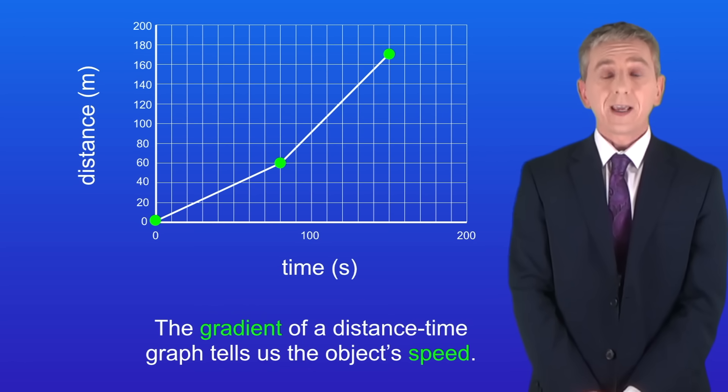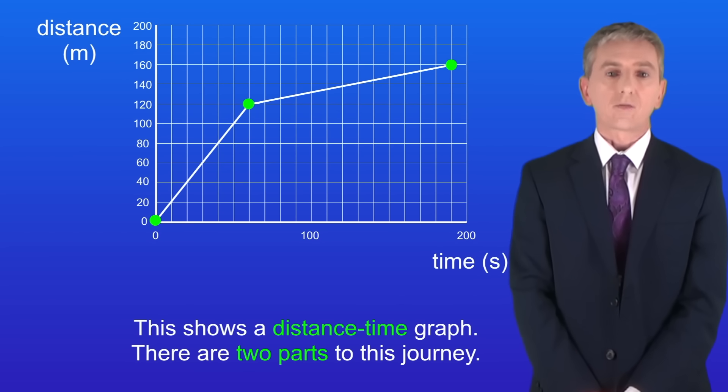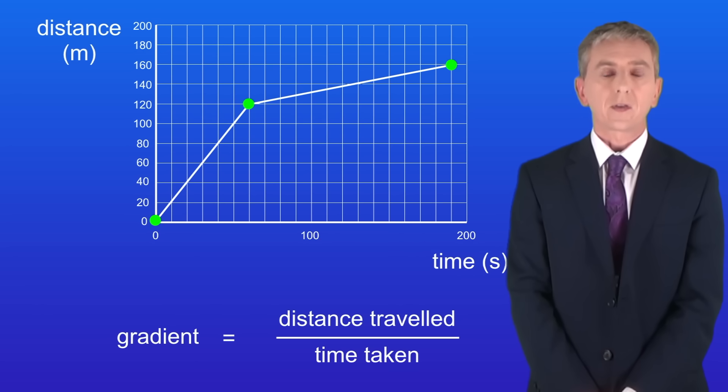Now the gradient of a distance-time graph tells us the object's speed. In the exam you could be shown a distance-time graph and asked to calculate the speed. So I'm showing you a distance-time graph here and as you can see there are two parts of this journey. We're going to use the gradient to work out the speed for both parts. To calculate the gradient we divide the distance traveled by the time taken.